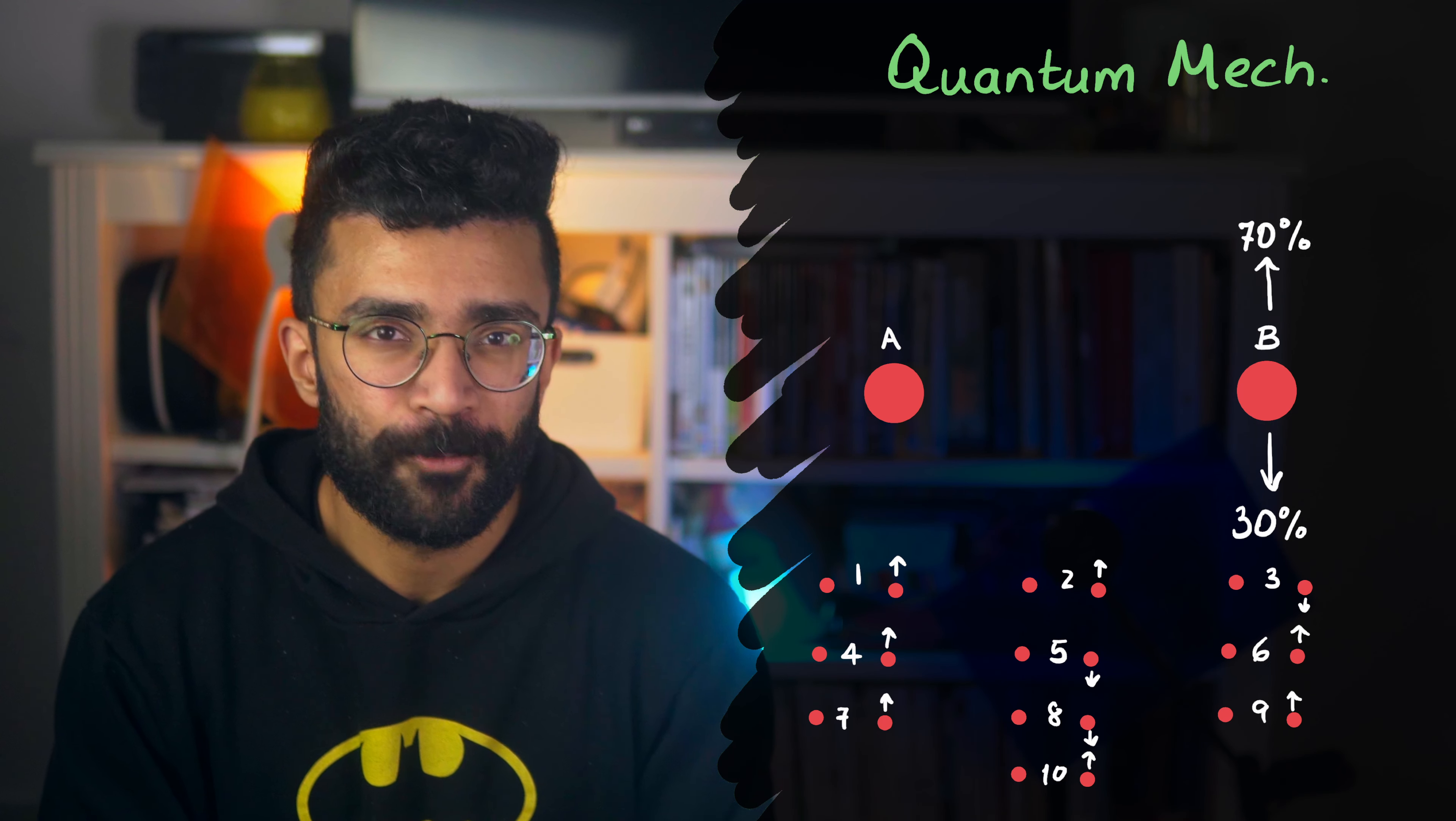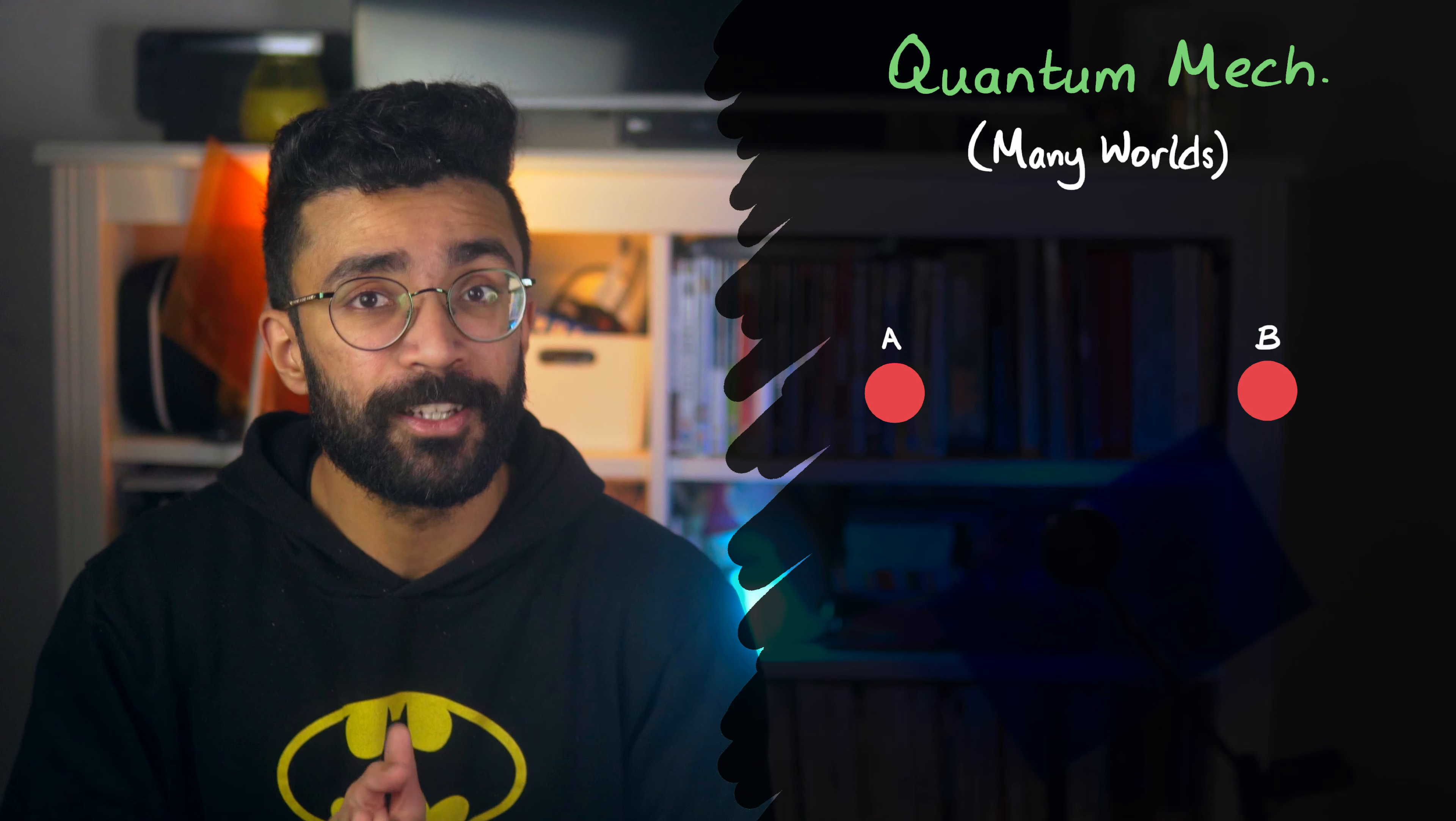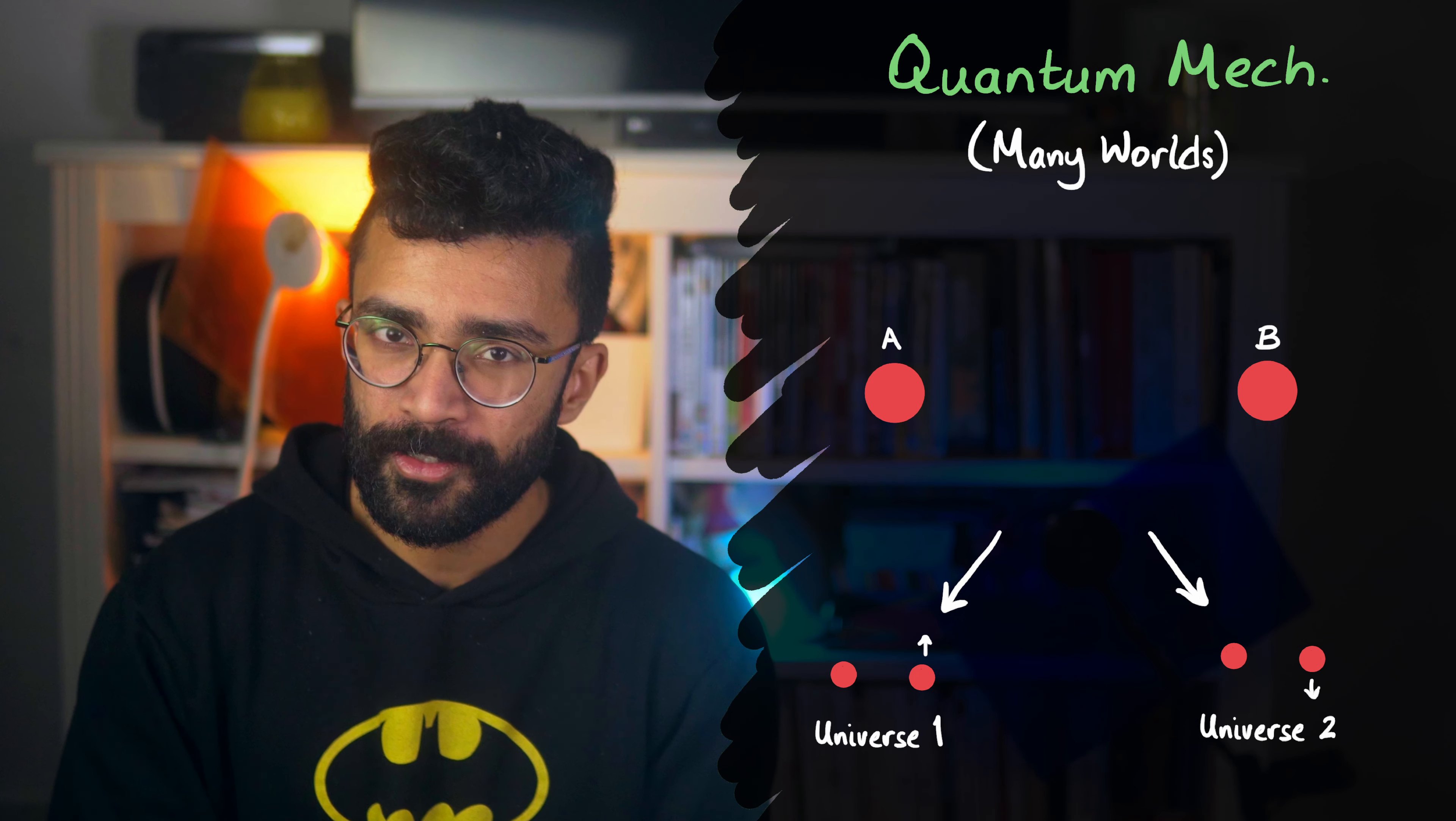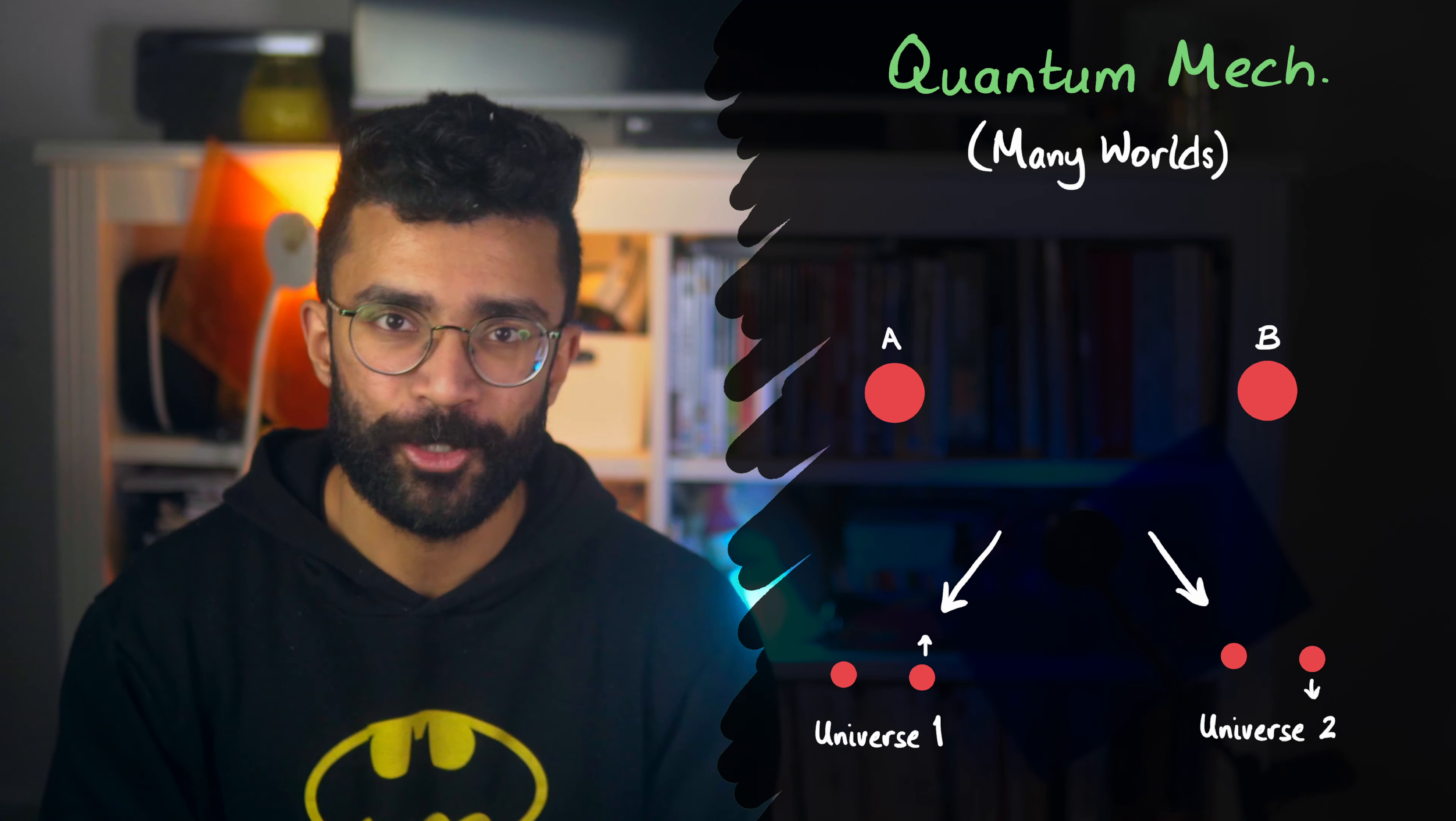But another interpretation of quantum mechanics somewhat resolves this issue. It's known as the Many Worlds Interpretation. It's quite popular, so many of us might have heard of it already. The idea is that every time something happens, the universe branches off so that all possible outcomes do actually occur, one in each universe.